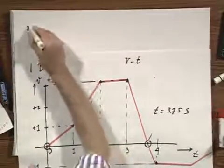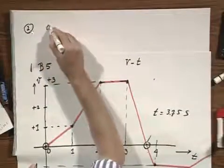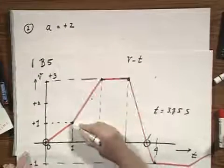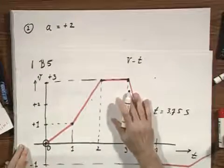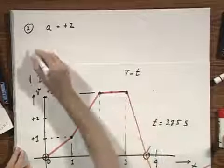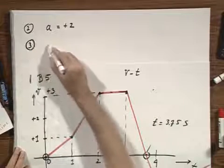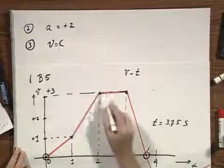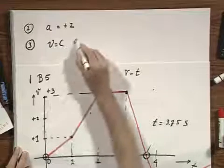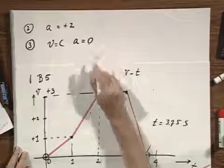During the second second, A equals plus 2 meters per second squared — you will be able to check that quite readily. During the third second, the velocity is constant at 3 meters per second, so the acceleration is 0.